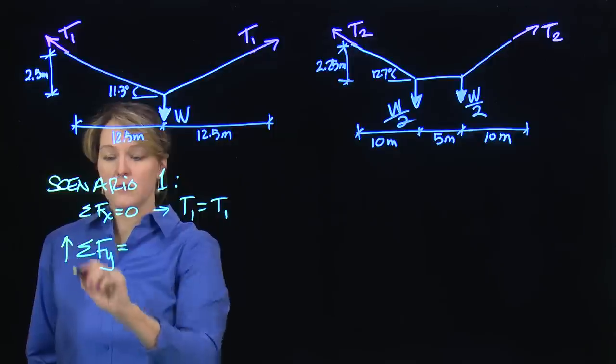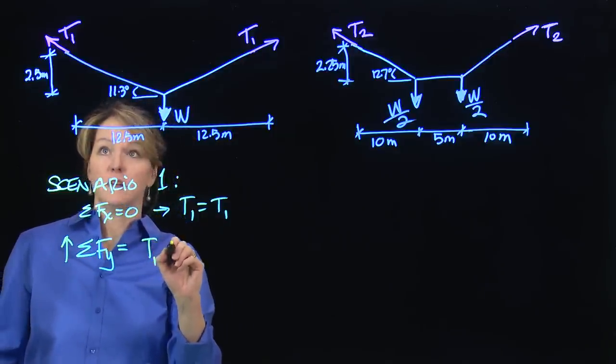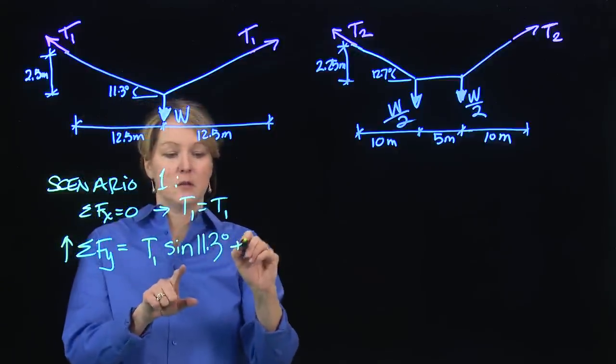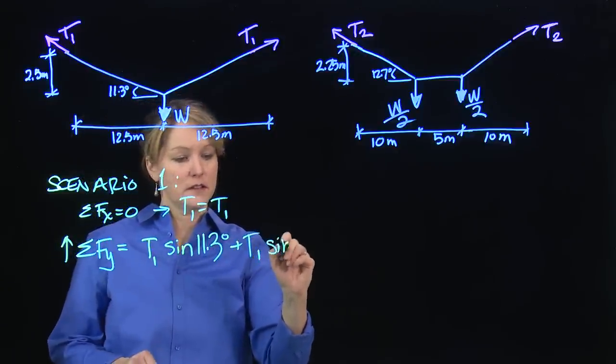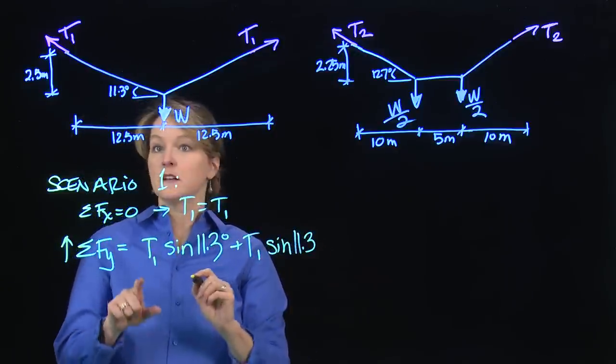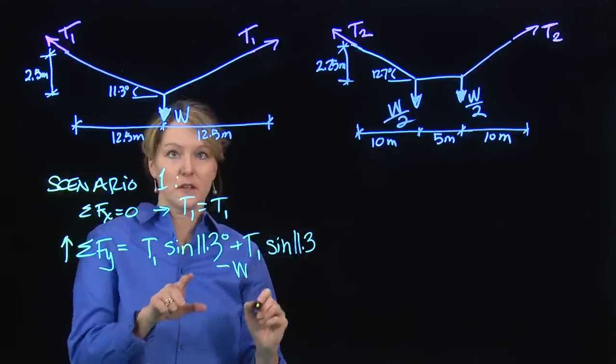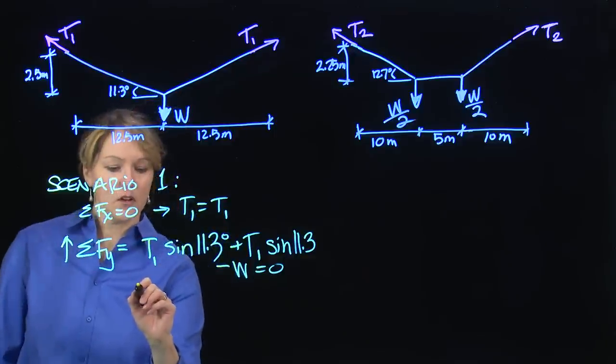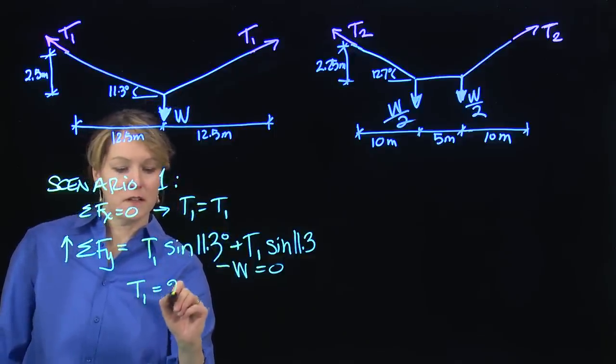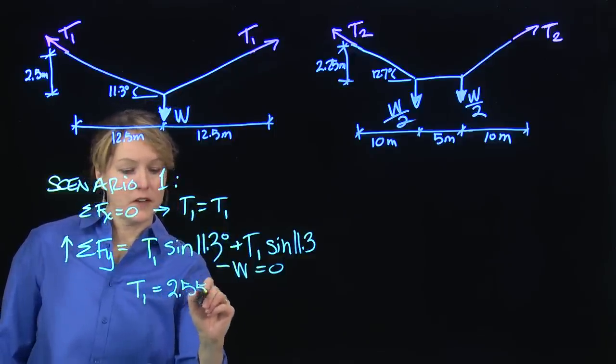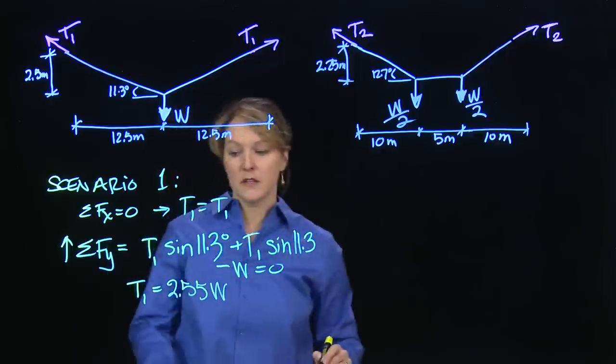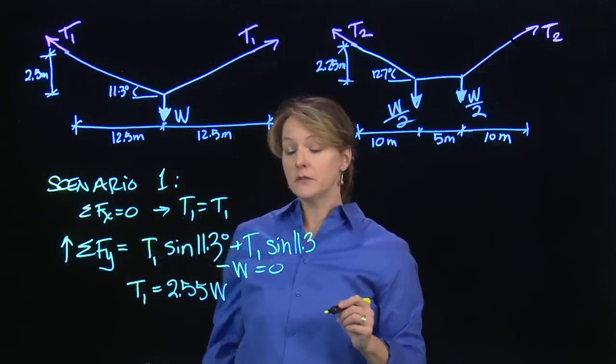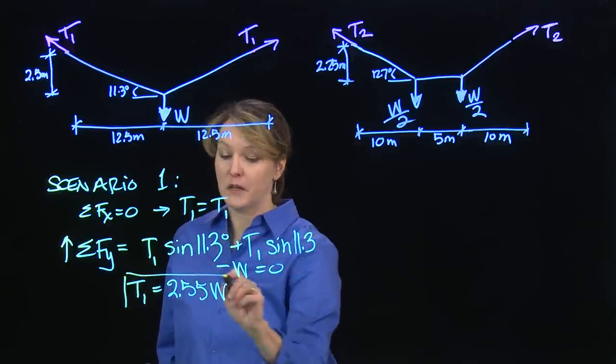Summing forces in the y direction, I have T1 times the sine of 11.3 degrees plus T1 sine 11.3, minus this applied load, all equal to zero. I can solve this equation for T1, and it ends up being 2.55 times W. That tells me the tension force as a function of the applied vertical load, and that was my goal.